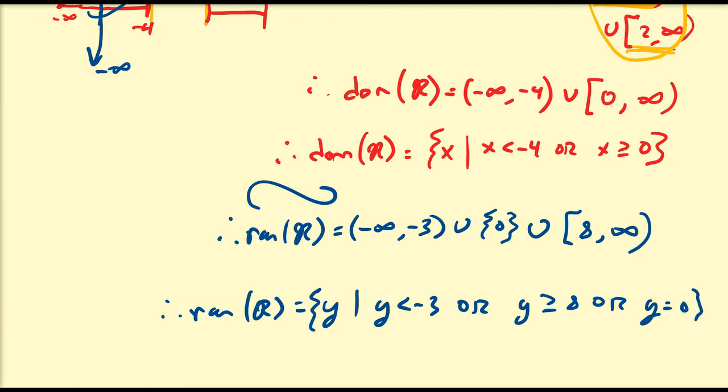In set notation, the range of this relation is the set of all y such that y is less than negative three, or y is greater than or equal to eight, or y is equal to zero. You can rewrite that in any order — it's the same interpretation. And that's just some basic overview of how to calculate the domain and range of relations if you have the graph already generated for you.